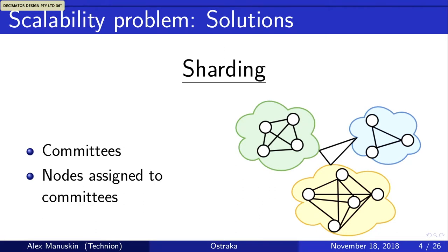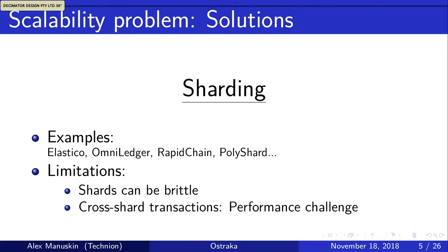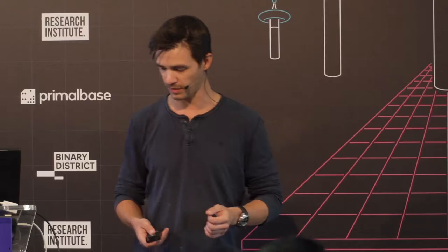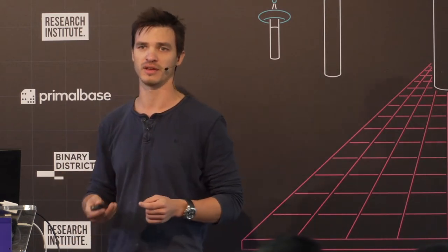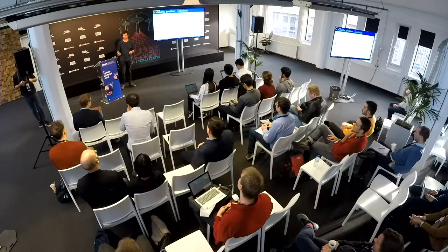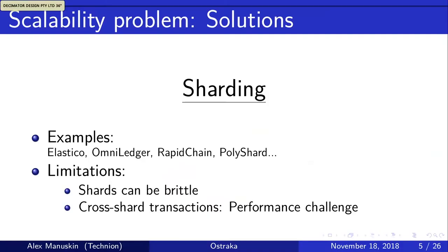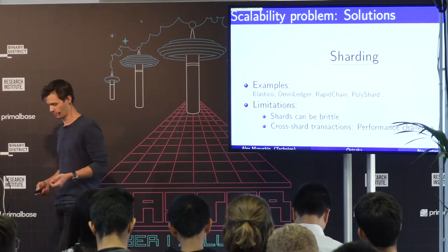Each node only needs to be allocated to one of the shards. There are plenty of examples, but these solutions have several limitations. First, shards can be brittle — if the hashing power is split between shards, one shard can be compromised, corrupting that shard and by extension the whole network. Another challenge is cross-shard transactions: as throughput increases, more transactions need to communicate between shards, which becomes a performance problem.